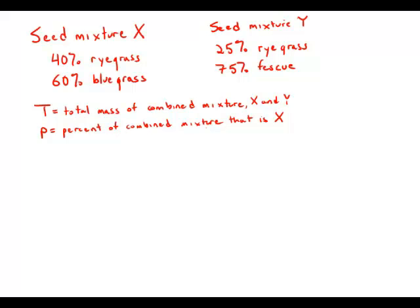Seed mixture X is 40% ryegrass and 60% bluegrass by weight. Seed mixture Y is 25% ryegrass and 75% fescue. If a mixture of X and Y contains 30% ryegrass, what percent of the mixture is made of seed from mixture X?